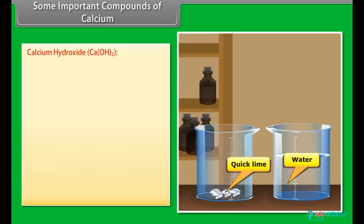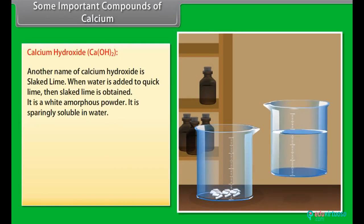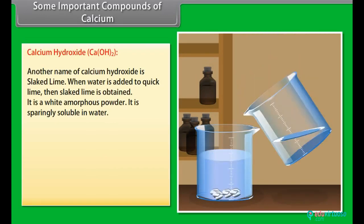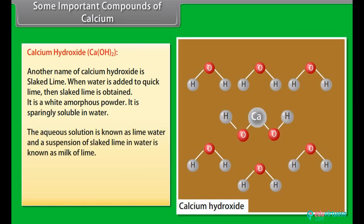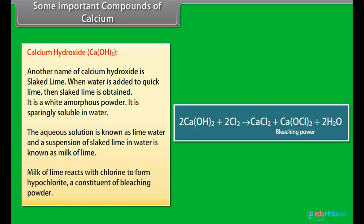Calcium hydroxide: another name of calcium hydroxide is slaked lime. When water is added to quick lime, then slaked lime is obtained. It is a white amorphous powder. It is sparingly soluble in water. The aqueous solution is known as lime water and a suspension of slaked lime in water is known as milk of lime. Milk of lime reacts with chlorine to form hypochlorite, a constituent of bleaching powder, plaster of Paris, and cement.